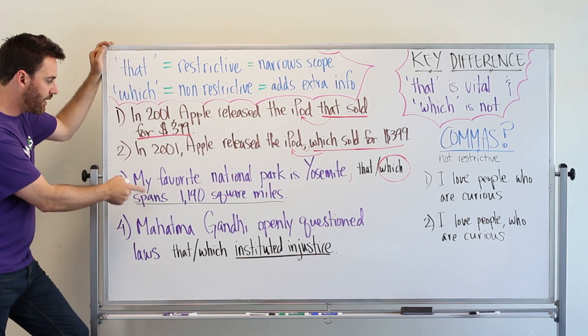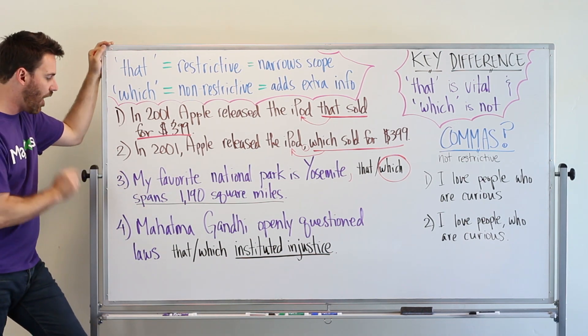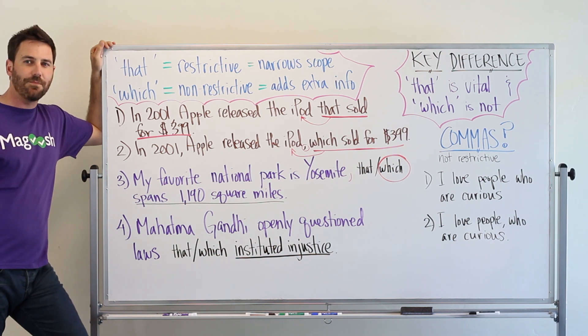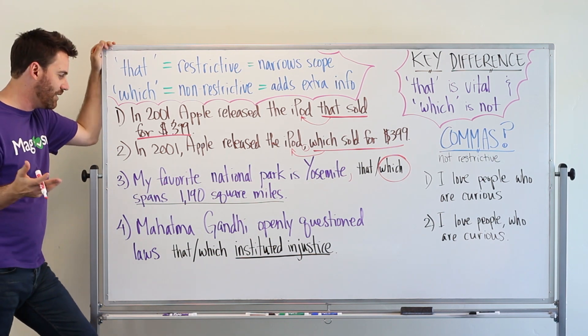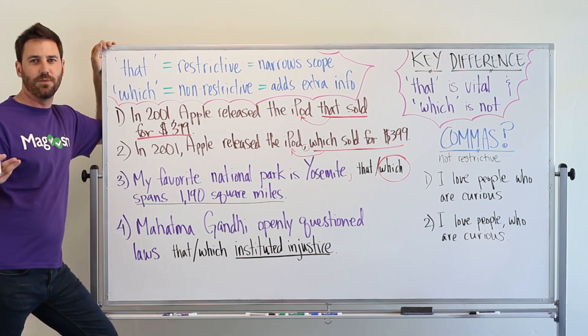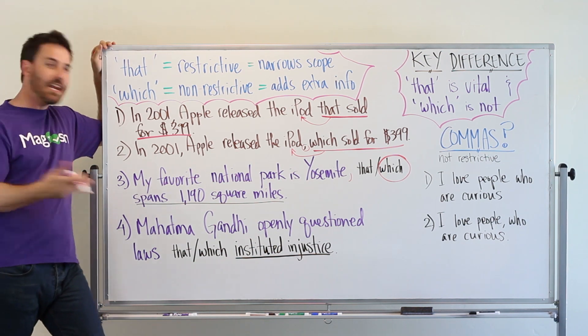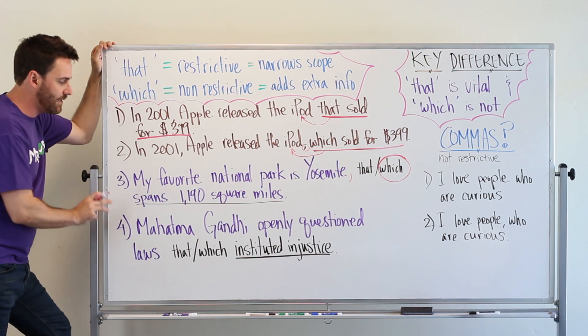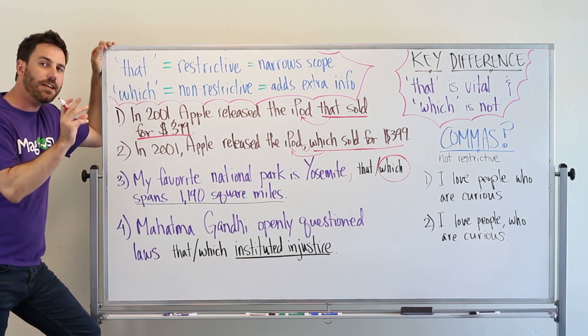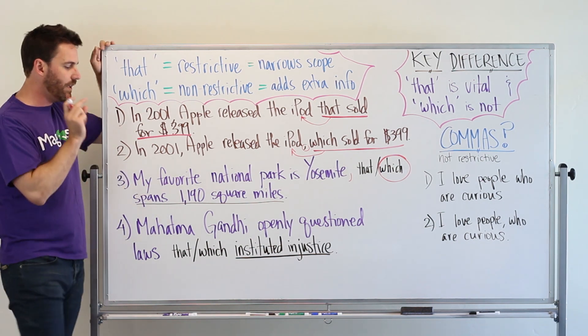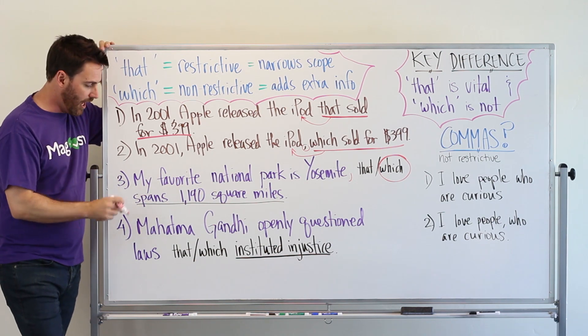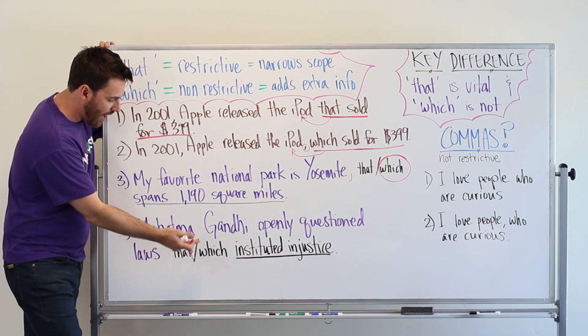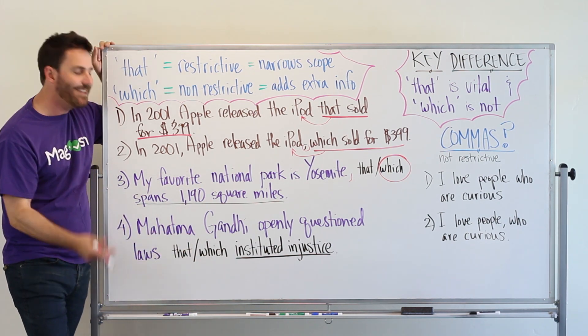Number four, Mahatma Gandhi openly questioned laws. If we stop there it makes it sound like Gandhi was an anarchist or just questioned any law regardless of the type of law it was. But that's not what this sentence is trying to convey. Gandhi questioned only a specific type of law. And that means that what comes after the laws is essential.